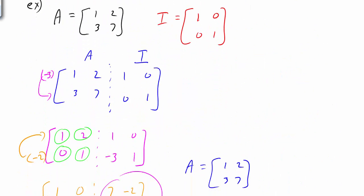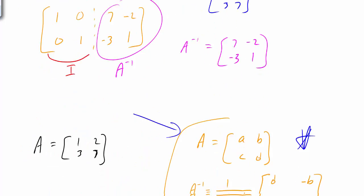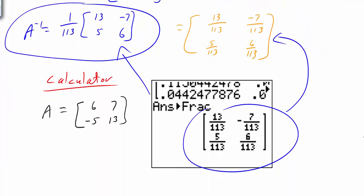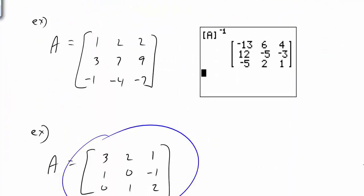Be aware of the steps for finding the inverse using the identity matrix. Be familiar with the formula if you have a 2 by 2 matrix. And keep in mind you can certainly use the calculator — if you have something like a 3 by 3 matrix, put it into the calculator and it will find the inverse for you.